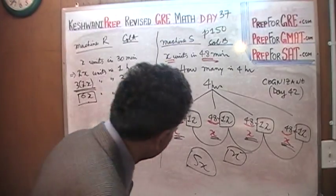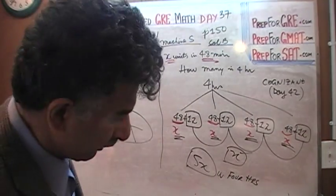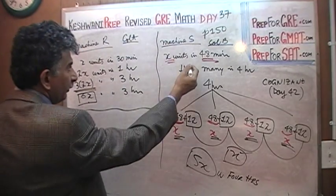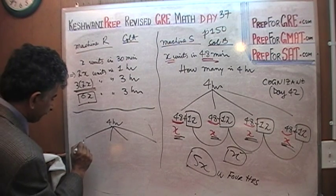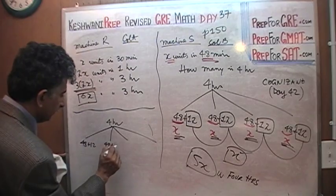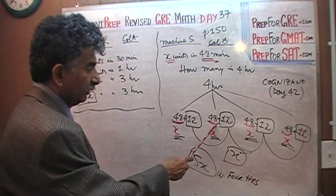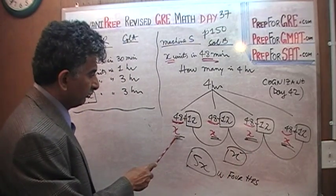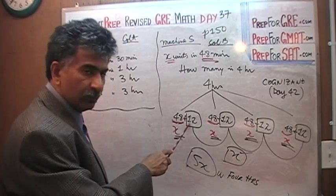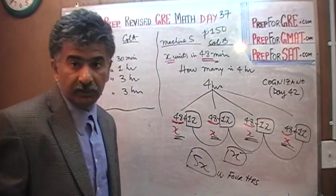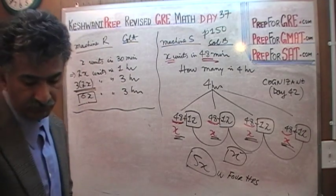So machine S makes 5X units in 4 hours. We split the 4 hours into four 1-hour blocks (each 48 + 12 minutes). Each 48-minute segment gives X units — four of them give 4X. The four leftover 12-minute pieces combine into another 48 minutes, giving one more X. That's 5X altogether, compared to 6X in column A. Therefore the answer is A.